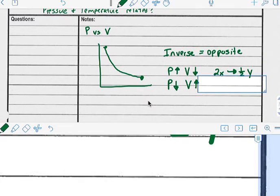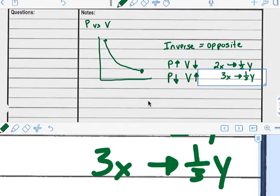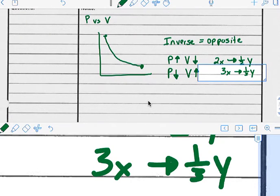And likewise, if you had three times of one, you'd have one third. So you're literally taking that inverse, inverse, reciprocal, whatever you want to think about it. So that's what you're doing. So pressure and volume. Now that makes sense, right?